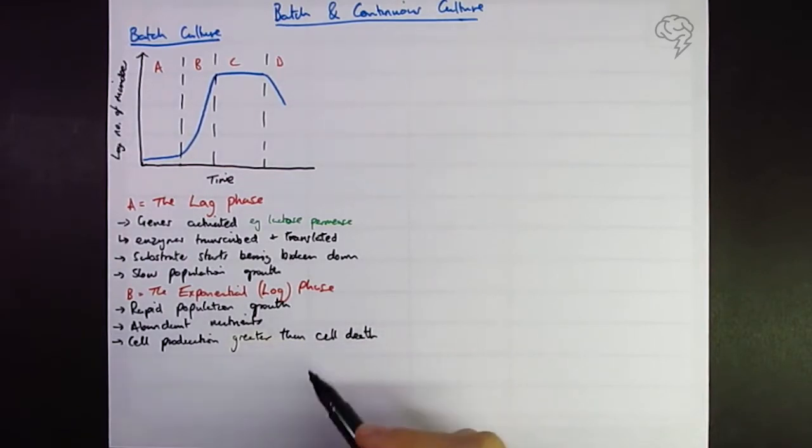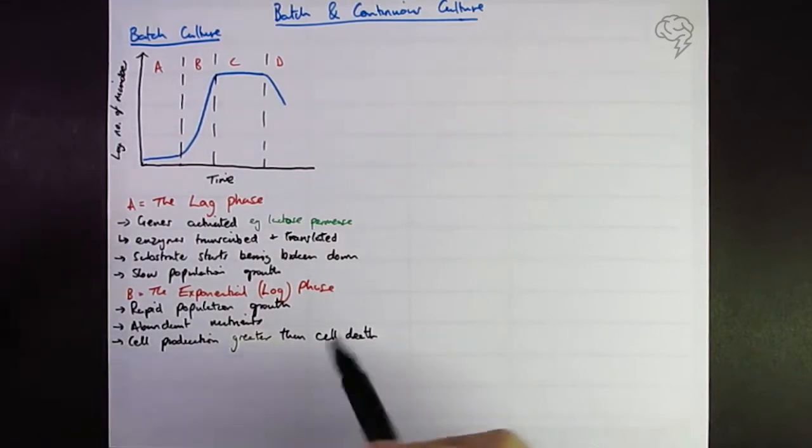And cell production or rate of cell division is greater than cell death, so they're growing faster than they're dying. Be a bit careful using the word cells if we're talking about a fungi. So this could be a classic case of penicillium to make penicillin.